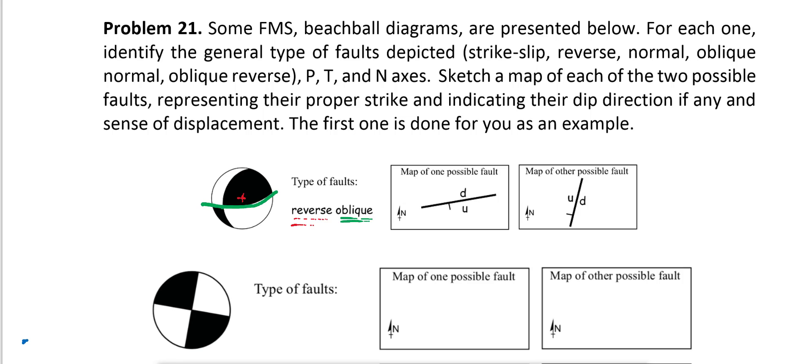In this graph we have two planes — one is the fault and the other one is the auxiliary plane. We don't know which one is the fault or the auxiliary plane, so we are giving two options on the map: one with the strike of east-west and the other one with the strike of north-south. Because they are reverse faults, we know in which direction they are dipping and which block should move up or down.